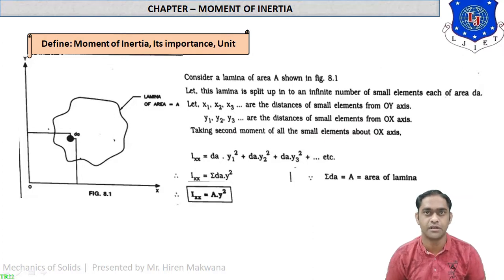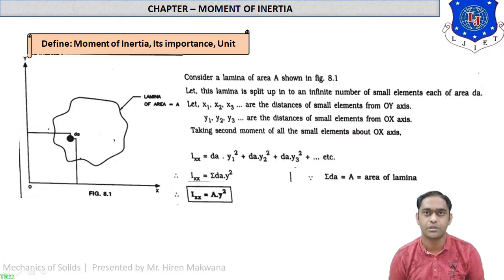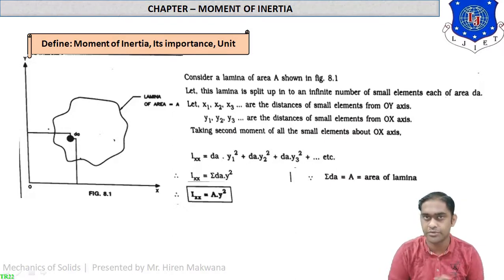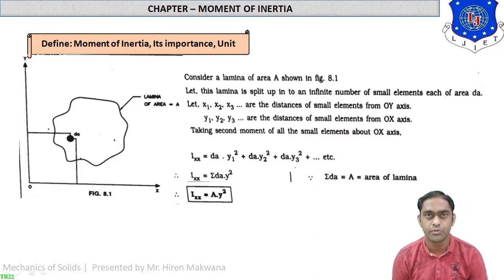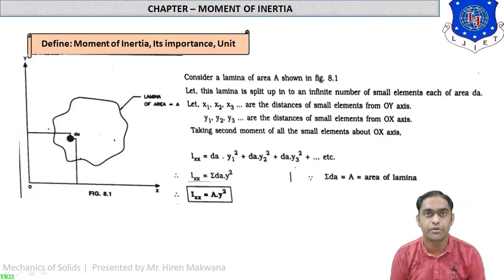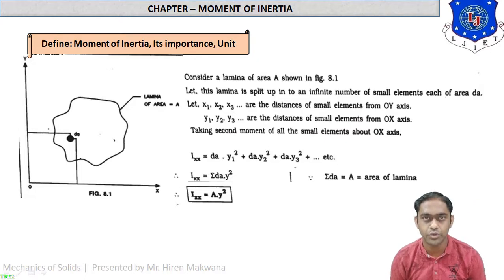Area moment of inertia means we have to take some product of area with respect to distance. Moment of inertia is not something visible — it is an invisible quantity. It is the matter of calculation only. Moment of inertia is denoted by capital I, and it is important for design purposes only. It cannot be visible or easily identifiable; it is only used in calculation.